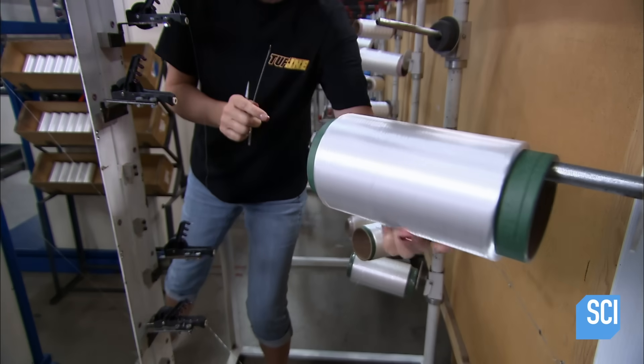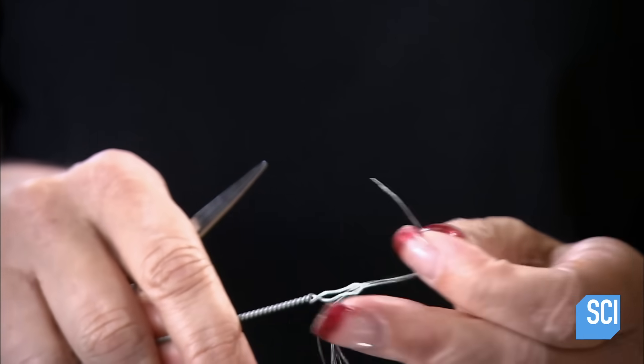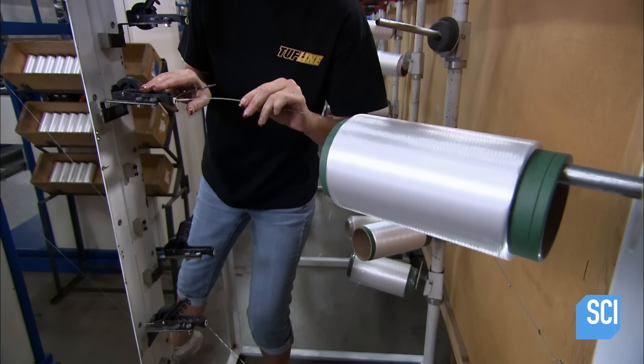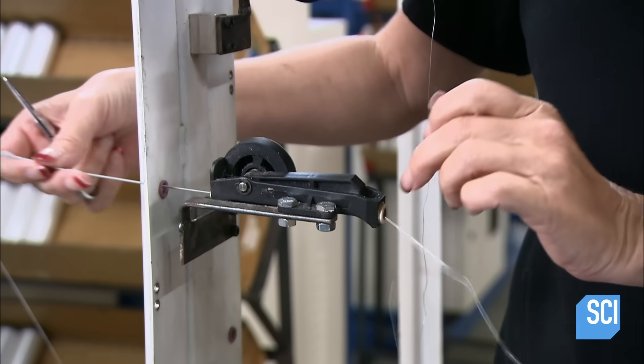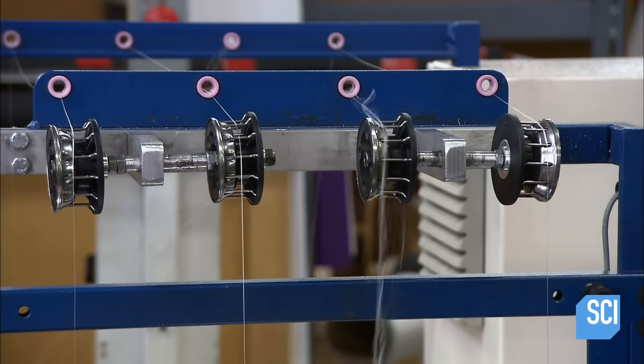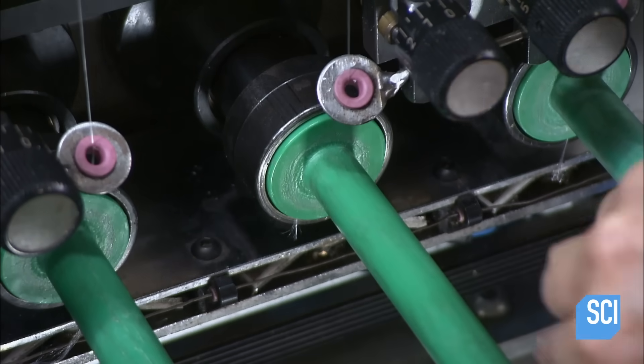To make these fishing lines, numerous microfibers are braided into a single tight cord. An employee starts by threading fibers through needles. She pulls the needles through spring-loaded devices. The devices keep the fibers at an even tension as they unwind onto small bobbins.